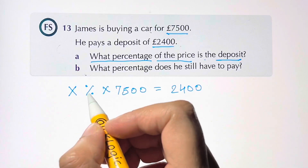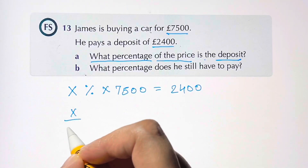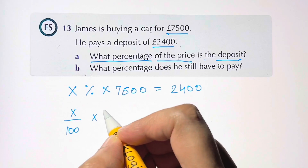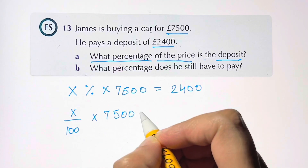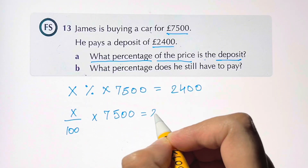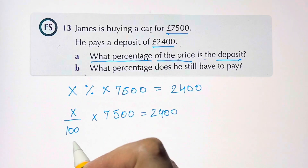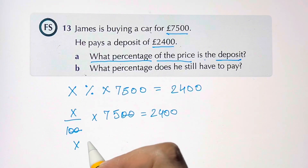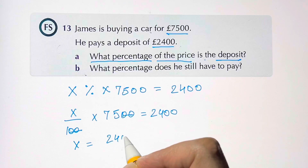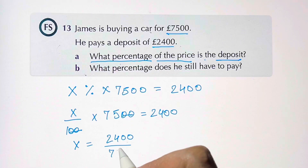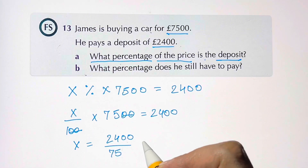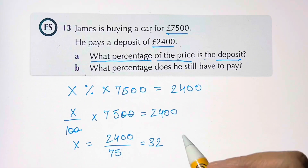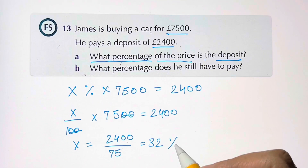Converting the percent symbol means dividing by one hundred, so X over one hundred times seven thousand five hundred equals two thousand four hundred. Canceling the zeros gives X equals two thousand four hundred divided by seventy-five, which equals thirty-two. So the deposit is thirty-two percent.